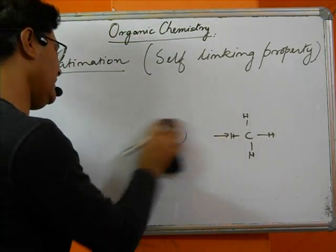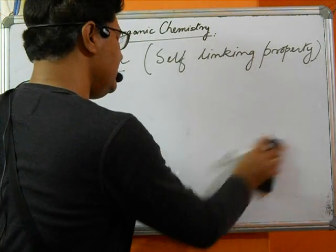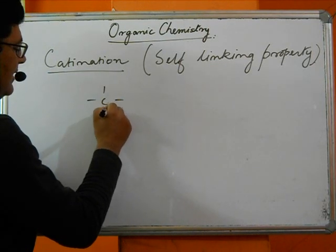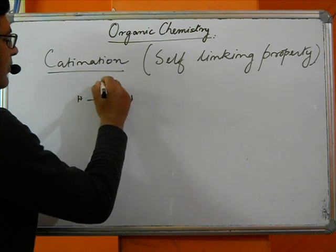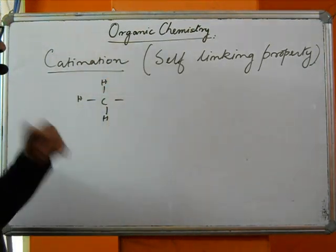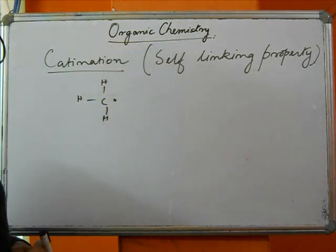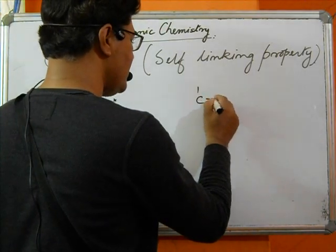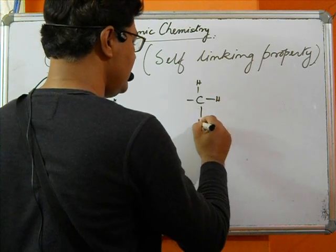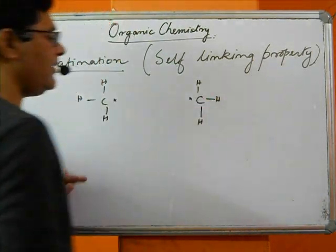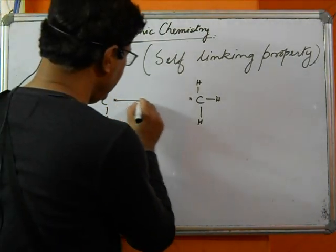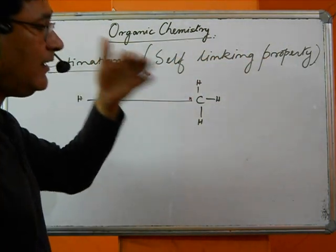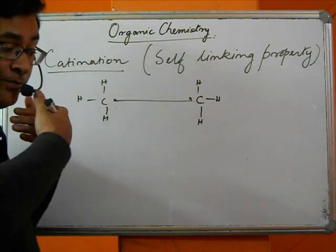Suppose four hydrogens are not available — then what would happen? The original molecule was CH4, but if hydrogen is not available, one electron remains unused, giving CH3 with one free arm. Carbon has a specific property of linking with each other — this self-linking property is catenation, and due to it, long chains are formed.